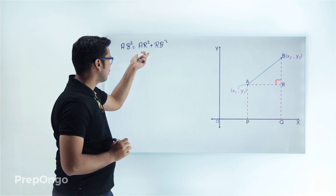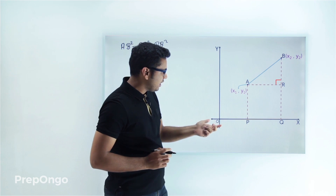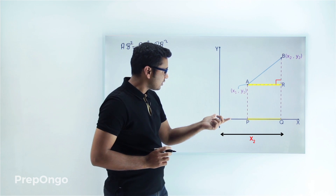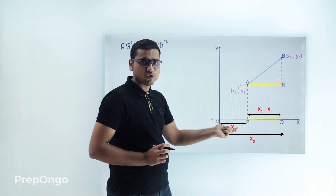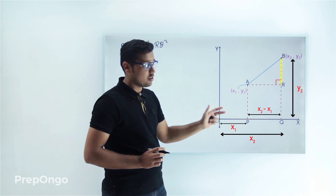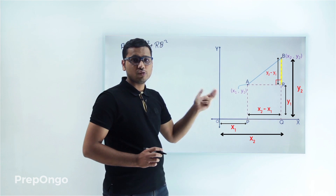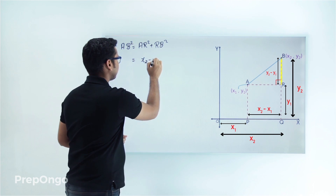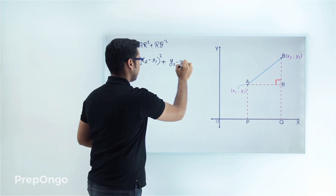Now we can find the values of AR and RB since we know the coordinates of point A and point B. AR will be equal to PQ, and we can find the length PQ as OQ is x2 and OP is x1. So the length AR will become x2 minus x1. Similarly, we can find the length RB. We know BQ is y2 and RQ is y1, so this length RB will become y2 minus y1.